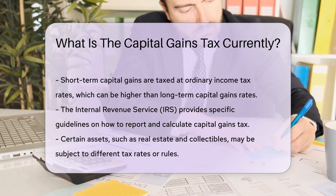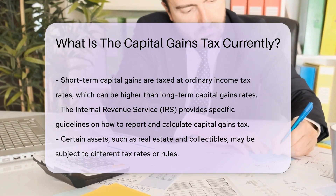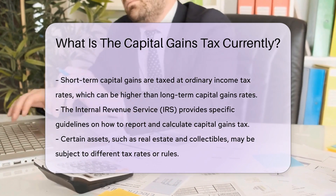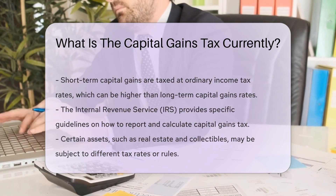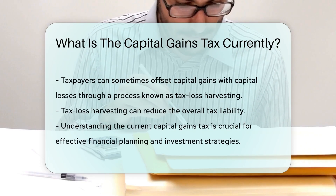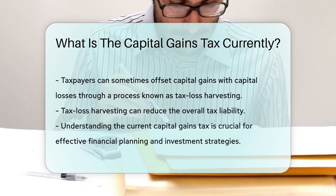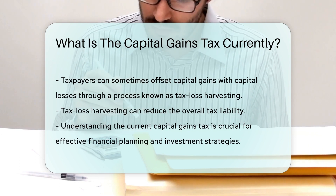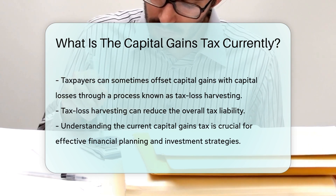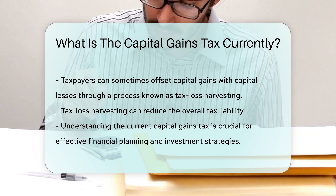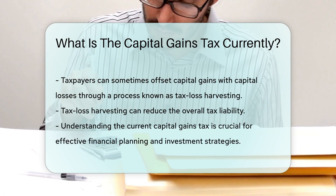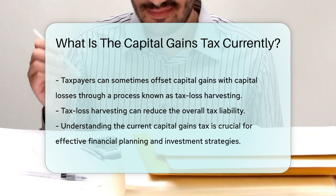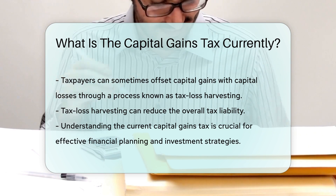Certain assets, such as real estate and collectibles, may be subject to different tax rates or rules. Taxpayers can sometimes offset capital gains with capital losses. This process is known as tax loss harvesting and can reduce the overall tax liability. Understanding capital gains tax is crucial for effective financial planning and investment strategies.